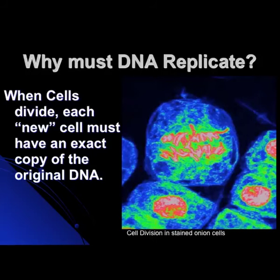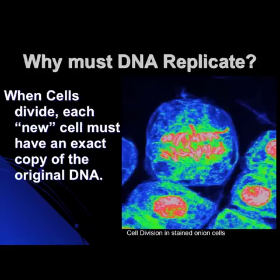Why must DNA replicate? When cells divide, the control mechanism of the cell from the nucleus is the DNA. So if it's going to be a particular kind of cell — a skin cell, a hair cell — it must have the exact copy of the DNA in both cells.